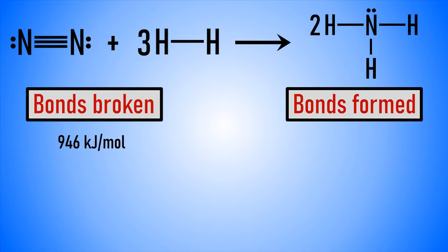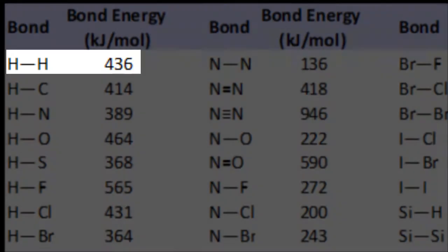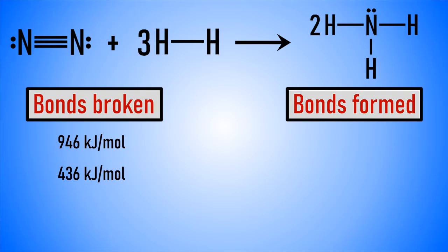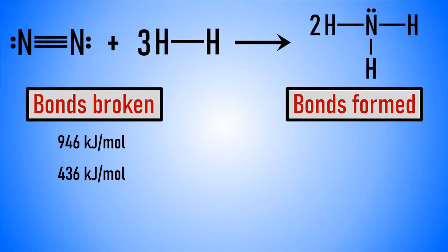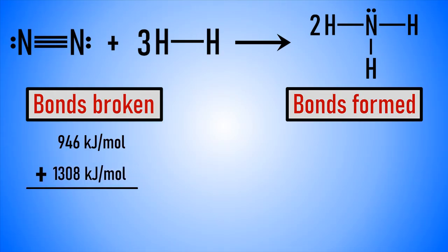Taking the same approach with the hydrogen-hydrogen single bond that is broken in this reaction gives a value of 436 kilojoules per mole. However, it's important to point out that there are three moles of H2 in this equation, not 1, as indicated by the coefficient of 3 in front of H2. So we need to multiply the bond energy of the hydrogen-hydrogen bond by 3, which gives us 1,308 kilojoules per mole. Adding together the energy for breaking the nitrogen-nitrogen triple bond and the three hydrogen-hydrogen single bonds gives us 2,254 kilojoules per mole — the amount of energy added to the system, so it's positive.